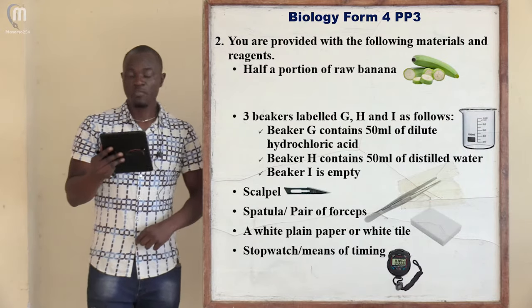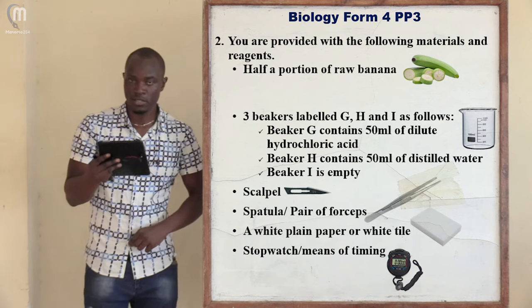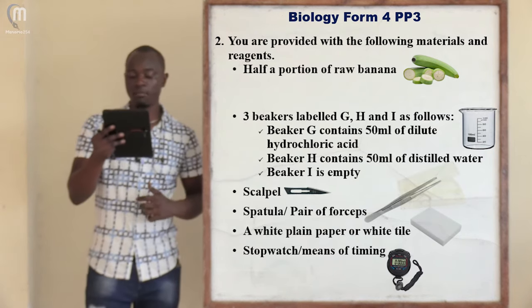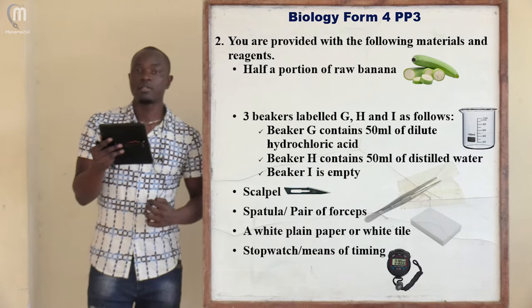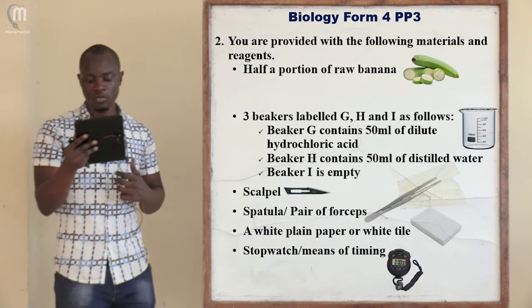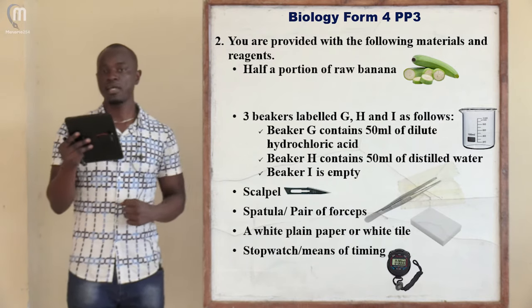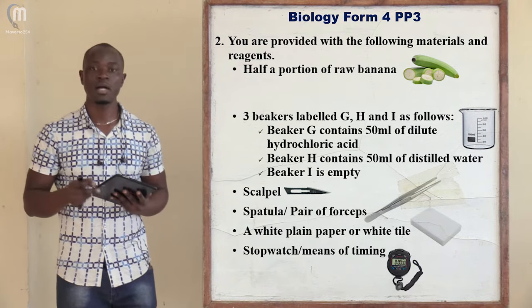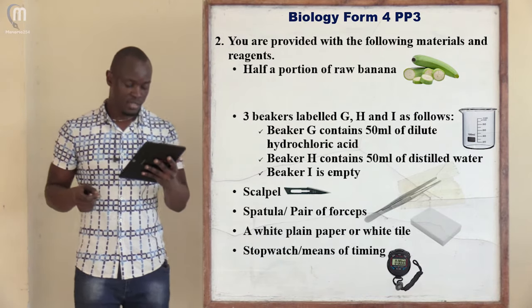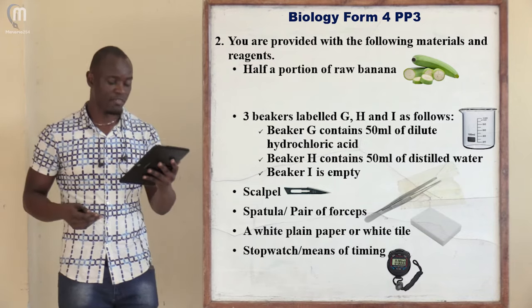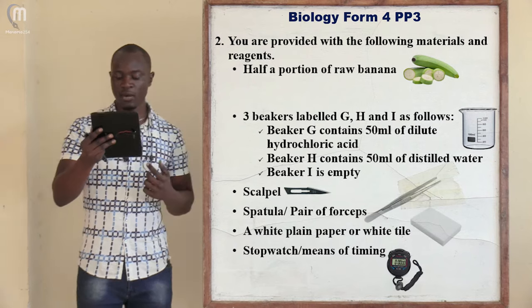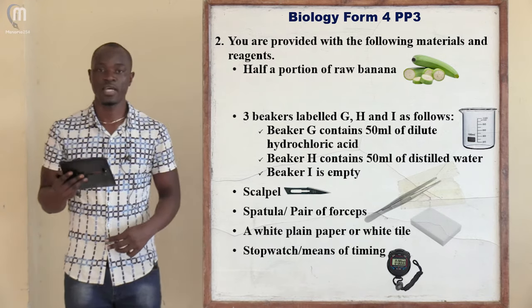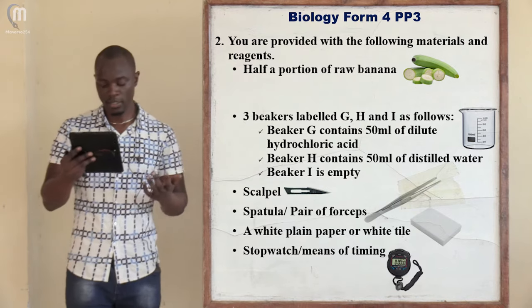The next question says: you are provided with the following materials and reagents. These include half a portion of raw banana; three beakers labeled G, H, and J — beaker G contained 50 ml of dilute hydrochloric acid, beaker H contained 50 ml of distilled water, and beaker J was empty. Also provided were a scalpel, a spatula or pair of forceps, a white plain paper or white tile, and a stopwatch or means of timing.